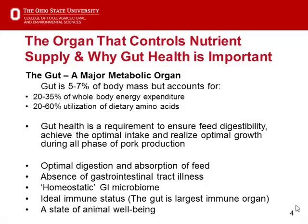Without antibiotics in the feed, preventing GI tract illnesses becomes a challenge. E. coli and salmonella challenges early on in the GI tract can cause scouring and post-weaning diarrheal diseases. We also need a homeostatic GI microbiome — though we're still mapping out what that means through sequencing. We need to understand physiologically what changing the microbiome via diet actually does to gut health and the animal's ability to grow. The GI tract is the largest immune organ, and antigens — bacterial, dietary, or viral — communicate with the underlying immune system.